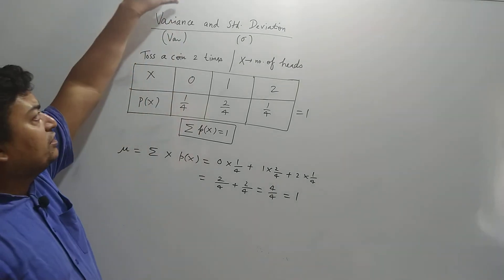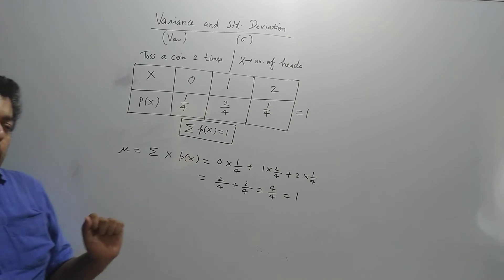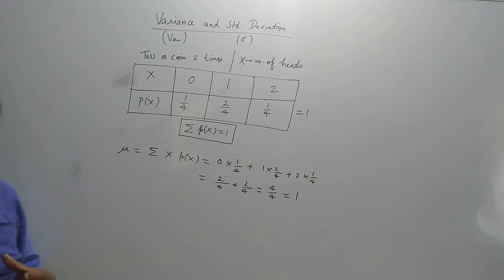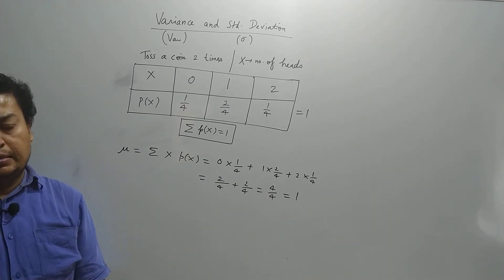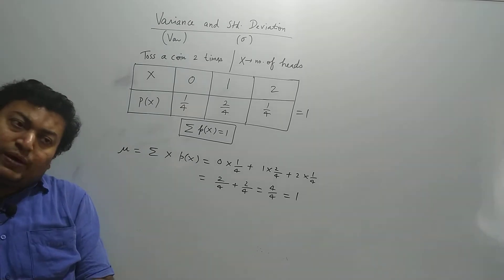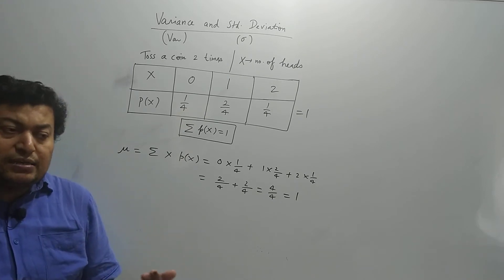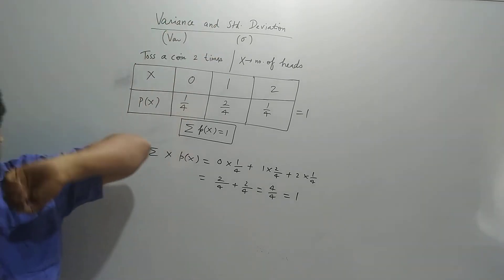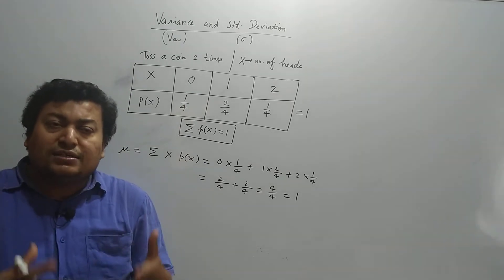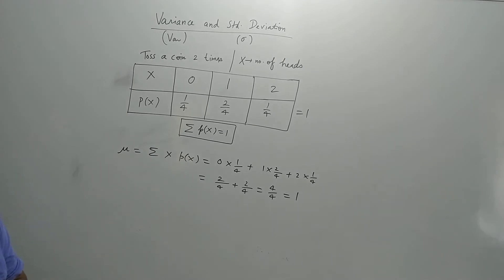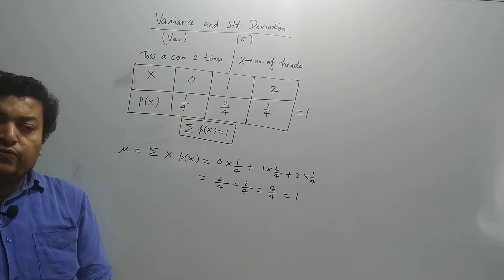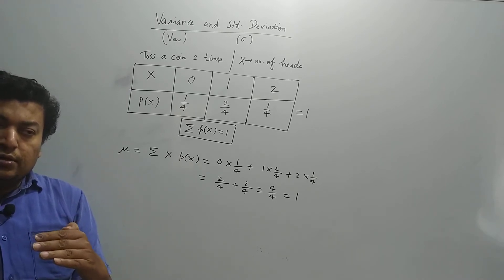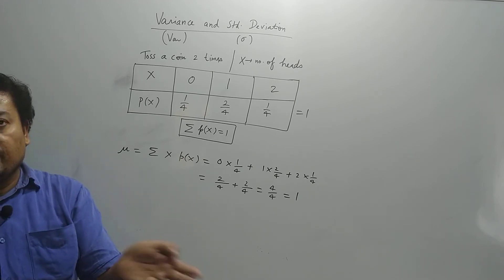Now we will understand what variance and standard deviation are. Variance is the measurement of how different values of x differ from the mean. Standard deviation has the same interpretation — the only difference is that standard deviation is the square root of variance, because when finding variance you have to square the difference every time.